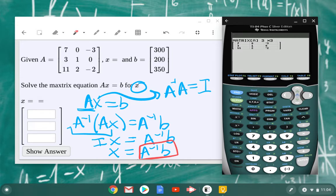So I want to go back into matrix, edit. I want to edit matrix B. I'm going to keep A there. So I want this to be a 3 by 1 matrix. And I can go ahead and put these values in: 300, 200, and 350.